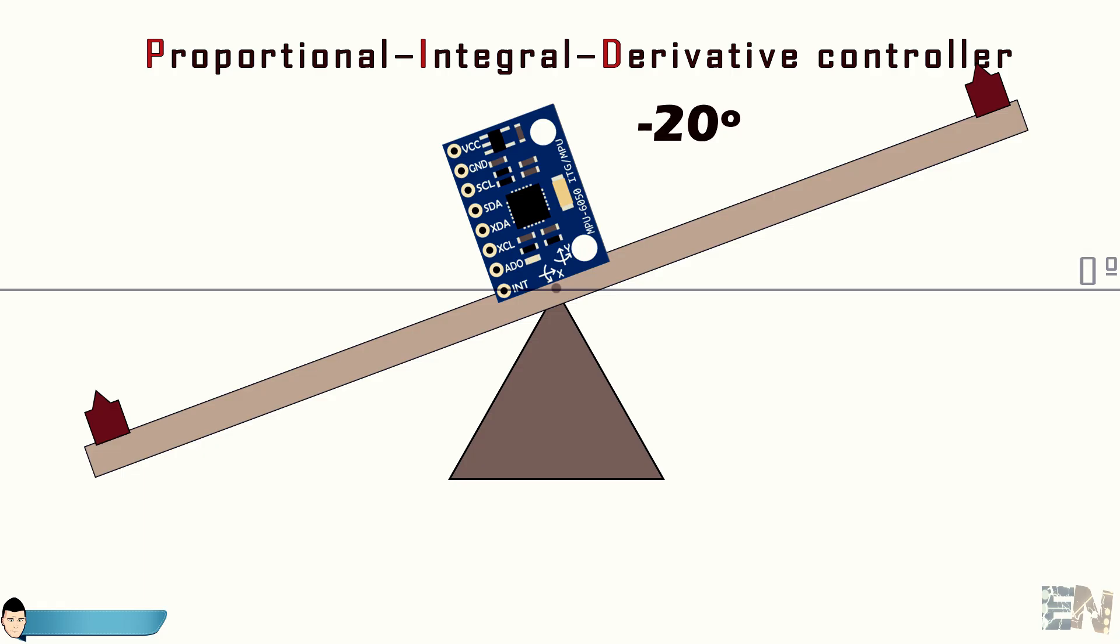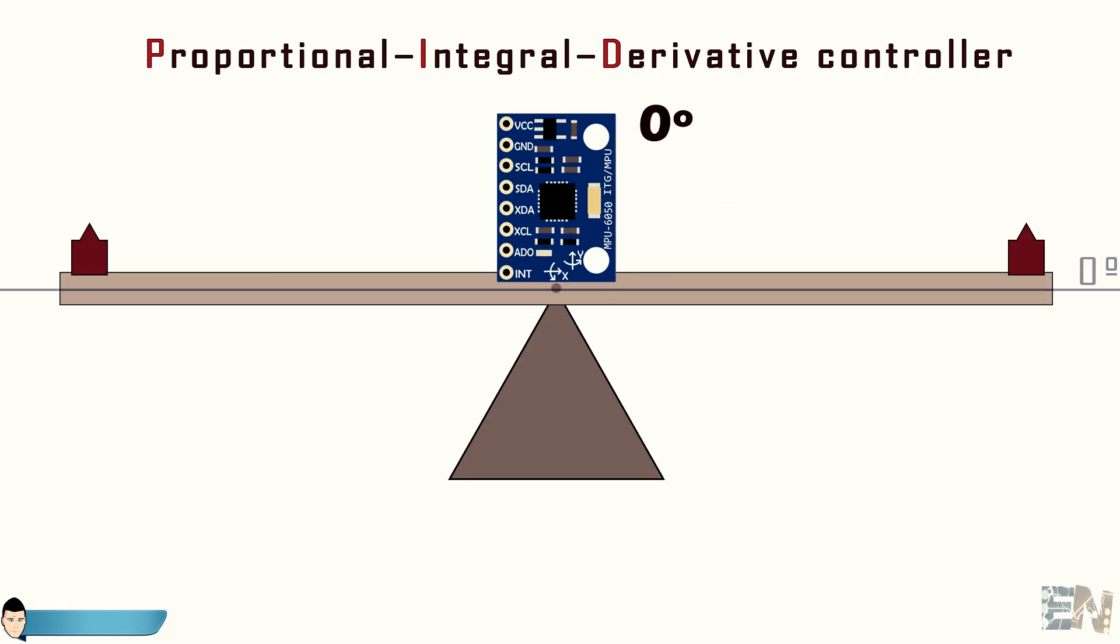First, let's see how we will proceed. We know the real angle of the metal bar and we want it to stay always at 0 degrees which is perfectly horizontal.